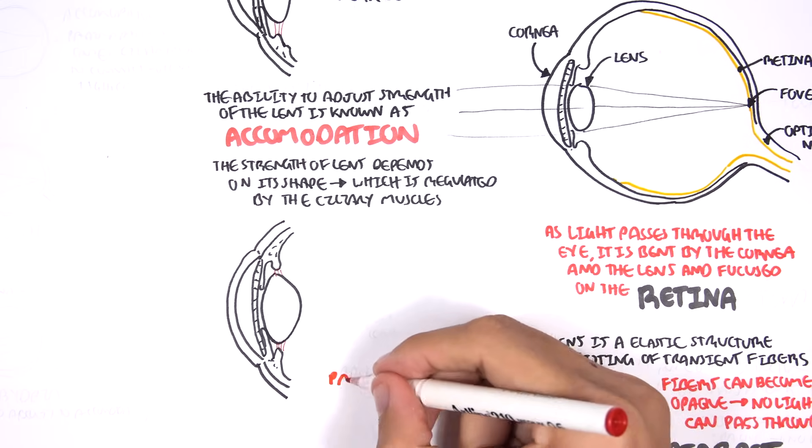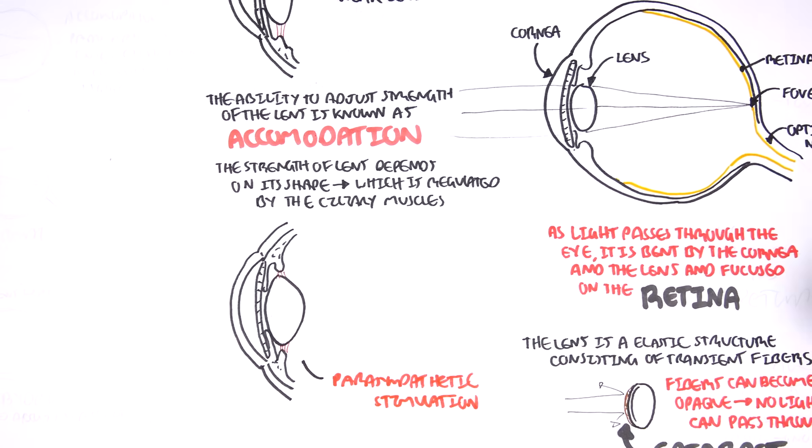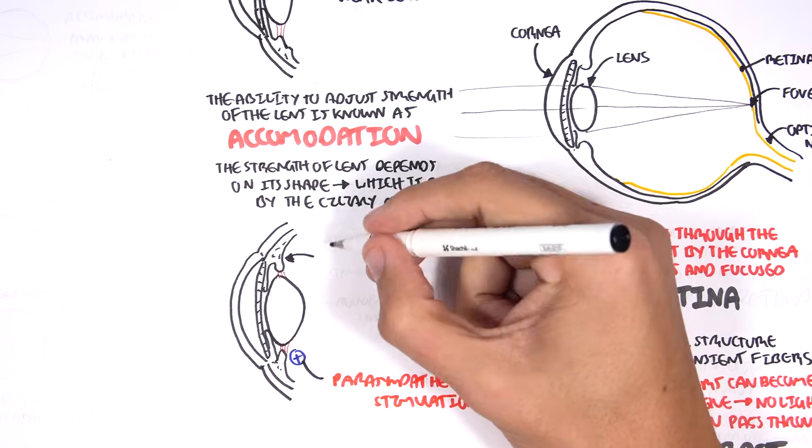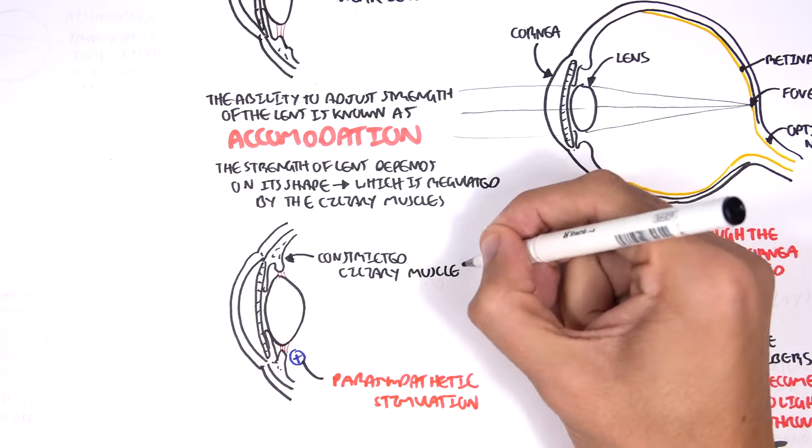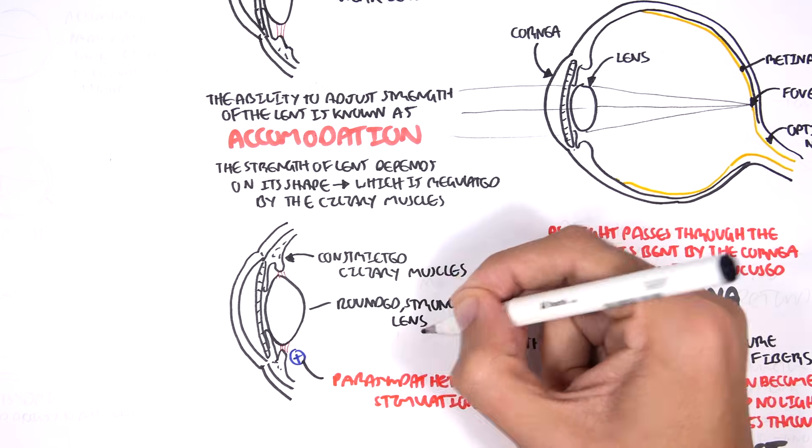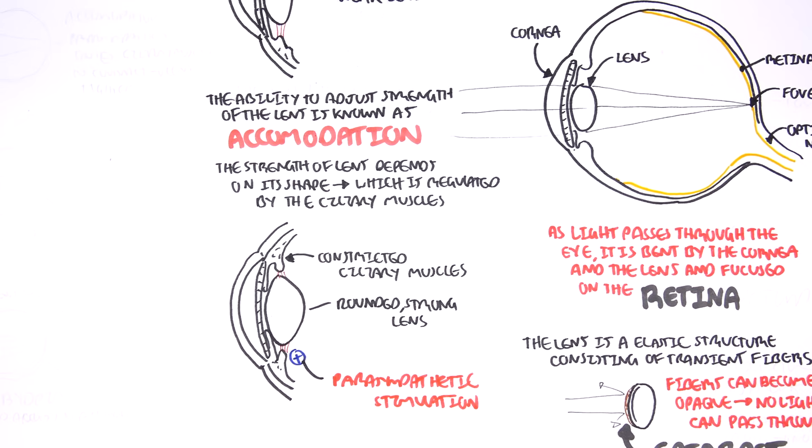Parasympathetic stimulation, on the other hand, will constrict the ciliary muscles, resulting in a rounded, strong lens. It's adjusting the strength of the lens for accommodation.